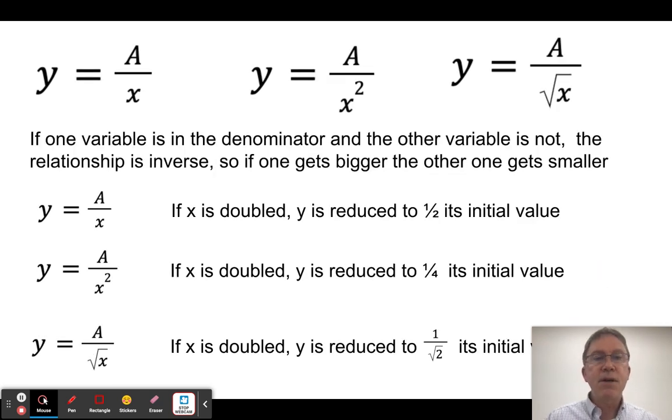But I could also have what we call an inverse relationship, and that's when I have a variable in the denominator. So if one of the variables is in the denominator, then the two are going to be inversely related to each other. So what we find is, in this case, if x gets doubled, y will be reduced to half of its original value.